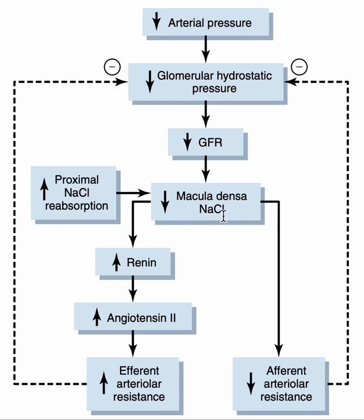The second mechanism is that macula densa will cause juxtaglomerular cells to release renin. Renin is an important protein enzyme that converts its substrate, angiotensinogen, into angiotensin 1. Angiotensin 1 is then converted into angiotensin 2 via angiotensin-converting enzyme. The role of angiotensin 2 is to constrict the efferent arteriole, increasing its resistance. By constricting the efferent arteriole, blood flow from the glomerulus cannot exit, so it stays within the glomerulus, generating hydrostatic pressure and causing an increase in GFR.